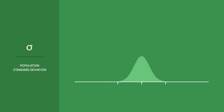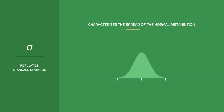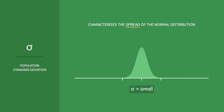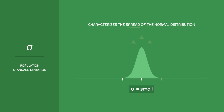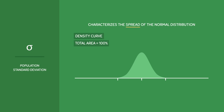On the other hand, the population standard deviation sigma characterizes the spread of the normal distribution. The larger the standard deviation, the more spread out the distribution will be, and the smaller the standard deviation, the less spread out it will be. Notice that when the spread increases, the curve gets much flatter, and when the spread decreases, the curve gets taller. This is because the normal distribution is a density curve and the total area must remain equal to 1 or 100%, so changes in width must be compensated by changes in height, and vice versa.